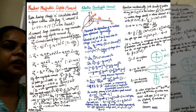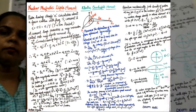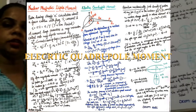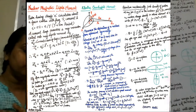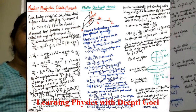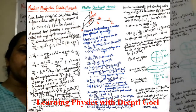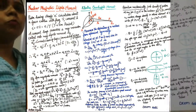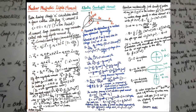The next property we study is the electric quadrupole moment. The shape of the nucleus is considered to be spherical, but if it deviates from its spherical nature, the degree to which it departs from spherical distribution is measured by the electric quadrupole moment. So the electric quadrupole moment measures the departure of a nucleus from its spherical symmetry.